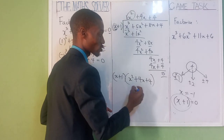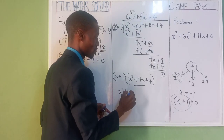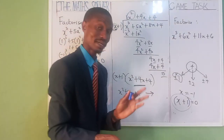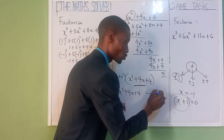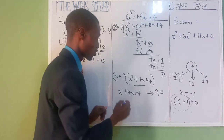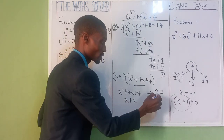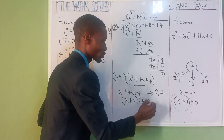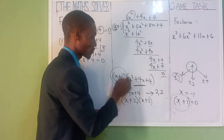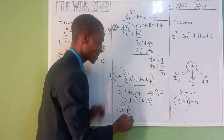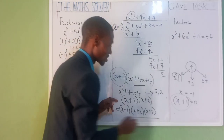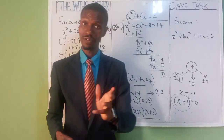This is not the final answer, because we can still factorize x squared plus 4x plus 4 further. Think of two numbers that multiply to give 4 and also add to give 4. That is 2 and 2: 2 times 2 is 4, and 2 plus 2 is also 4. So this factorizes as x plus 2 and x plus 2. The final answer is x plus 1, times x plus 2, times x plus 2. That's how you factorize it — very simple.